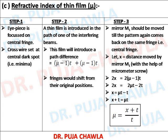Keeping mu on one side and bringing all other terms to the other side, the equation comes out to be mu equals x plus t upon t. So this is the method to calculate the refractive index of a thin film using Michelson interferometer. X is the distance moved by the mirror, measured with the apparatus. Small t is the known thickness of the thin film. Substituting x and t in the equation gives the refractive index.